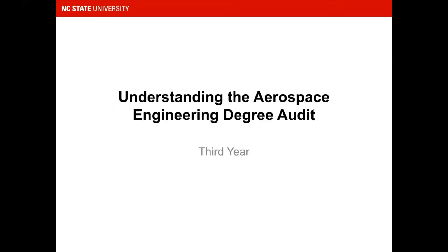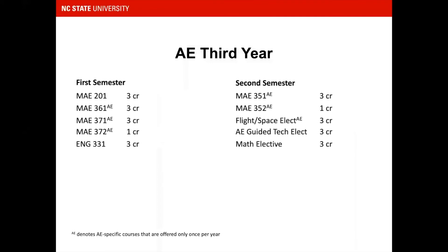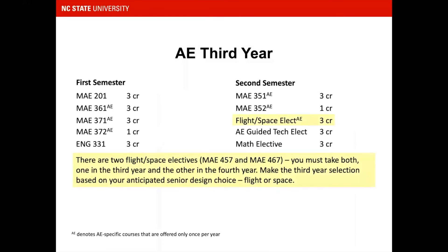Understanding the Aerospace Engineering Degree Audit, Year 3. The third year is when AE students delve deeper into aerospace engineering subjects, and most courses this year are offered only once a year. Note the Flight/Space Elective in the second semester — there are actually two of these, one in the third year and one in the fourth year. Two courses fall into this elective group: MAE 457 and MAE 467, and you are required to take both. The intent is for the third-year selection to be based on your anticipated senior design choice — MAE 457 for Flight, MAE 467 for Space — however, the choice does not lock you into a specific senior design option.